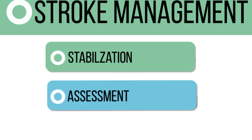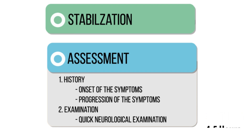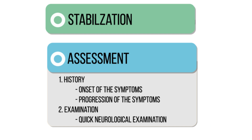Following stabilization, take a quick history. Time of onset of symptoms is important to find out if the patient is within the thrombolytic window, which is 4.5 hours. Then ask about the progression, as rapid recovery of weakness indicates a transient ischemic attack rather than a stroke.